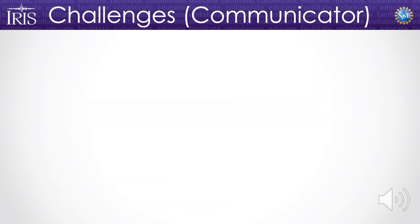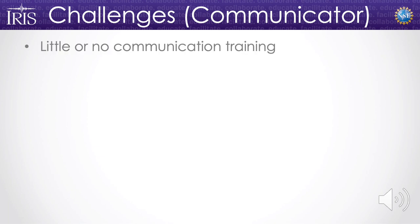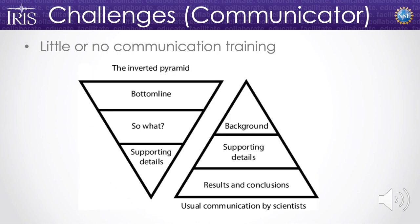Let's think about some of the challenges we have as communicators when communicating science. One thing that comes to mind is that scientists get little or no communication training, and the training we do get in science writing, giving talks, and science communication is actually backwards from good communication practices. The usual communication from scientists — think about talks at GSA — starts with background, then methodology and supporting details, ending with results and conclusions. Good communication practices outside a scientific conference flip this: you give the bottom line first. Why does it matter? So what? Who cares? And then you give all the supporting details.